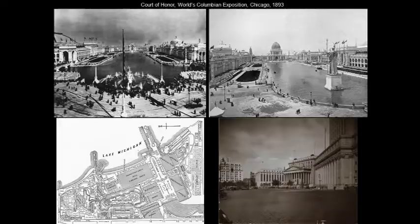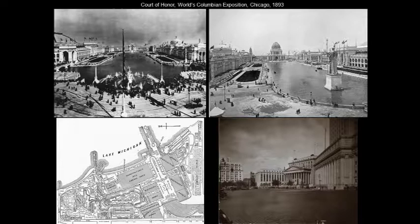What we're looking at in the top two images is this coordinated complex of buildings that surrounded the central lagoon — just off of Lake Michigan, a kind of watery lagoon at the center of the fair. At the head of it you see the domed, very Roman, heavy, monumental, columned, porticoed building that was the administration building.